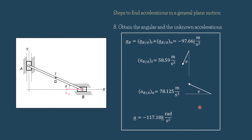This is the answer. Vector AB equals negative 97.66i meters per second squared. The tangential component of the acceleration of B relative to A is 58.59 meters per second squared directed at angle theta from the vertical line, to the left downward. The normal component equals 78.125 meters per second squared directed at angle theta from the horizontal, to the left upward. The angular acceleration of rod AB equals negative 117.18k radians per second squared, which means clockwise.